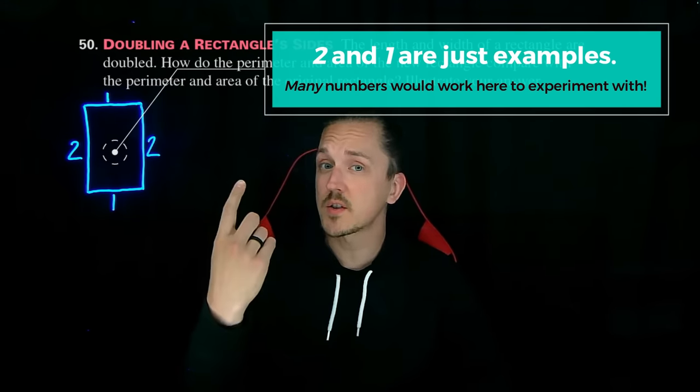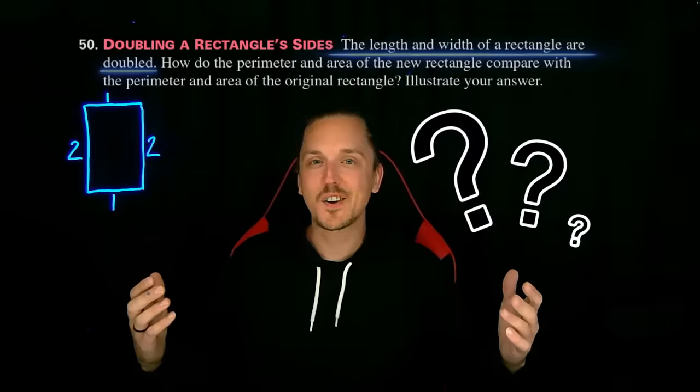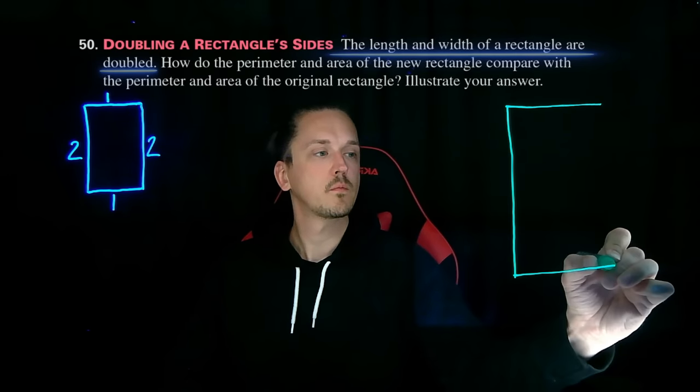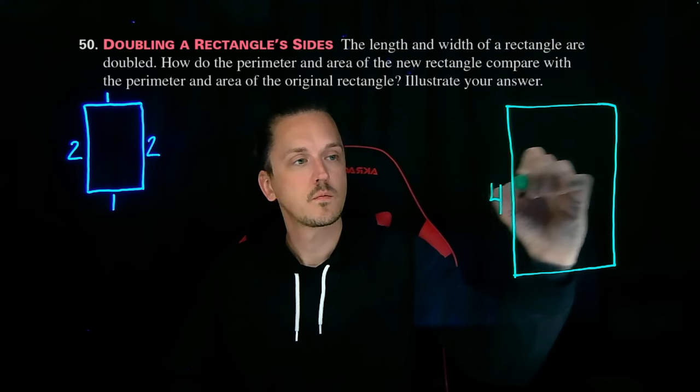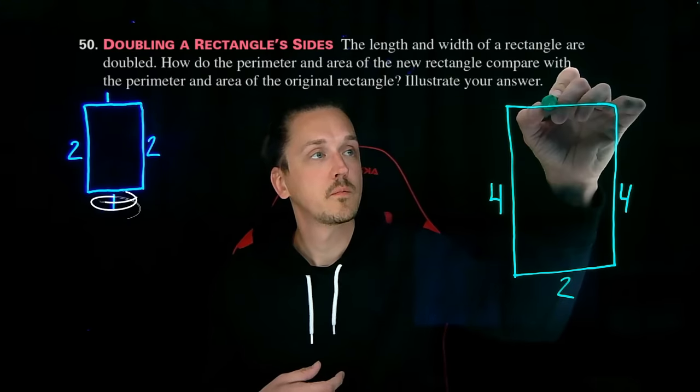Now our instructions say the length and width of a rectangle are doubled. How can we illustrate or draw that? Let's draw a second rectangle with length and width doubled. So this second rectangle will have length double two or four, and the width will be double of one or two.